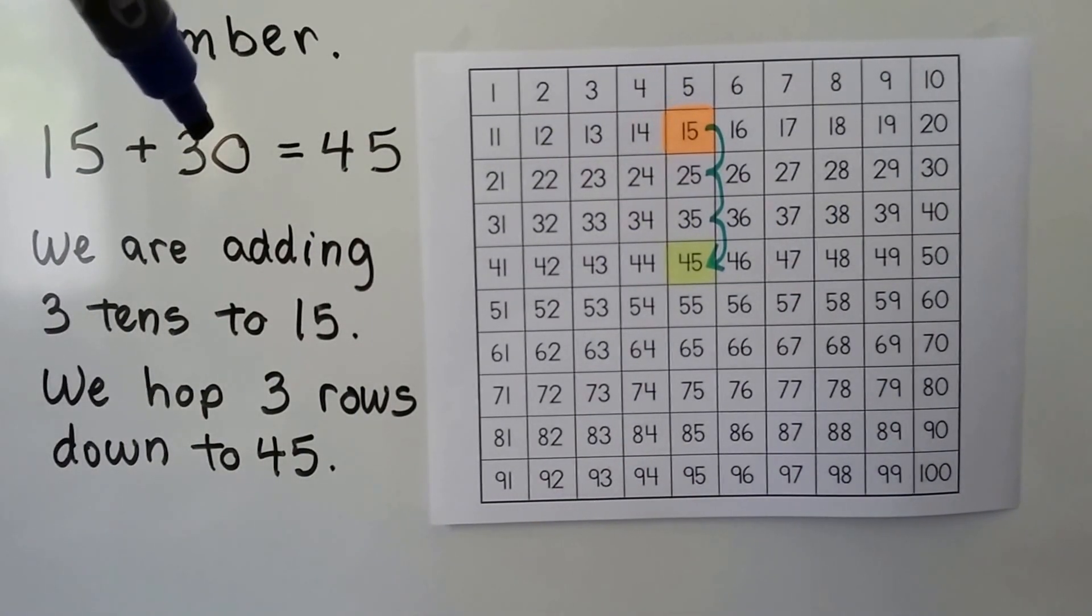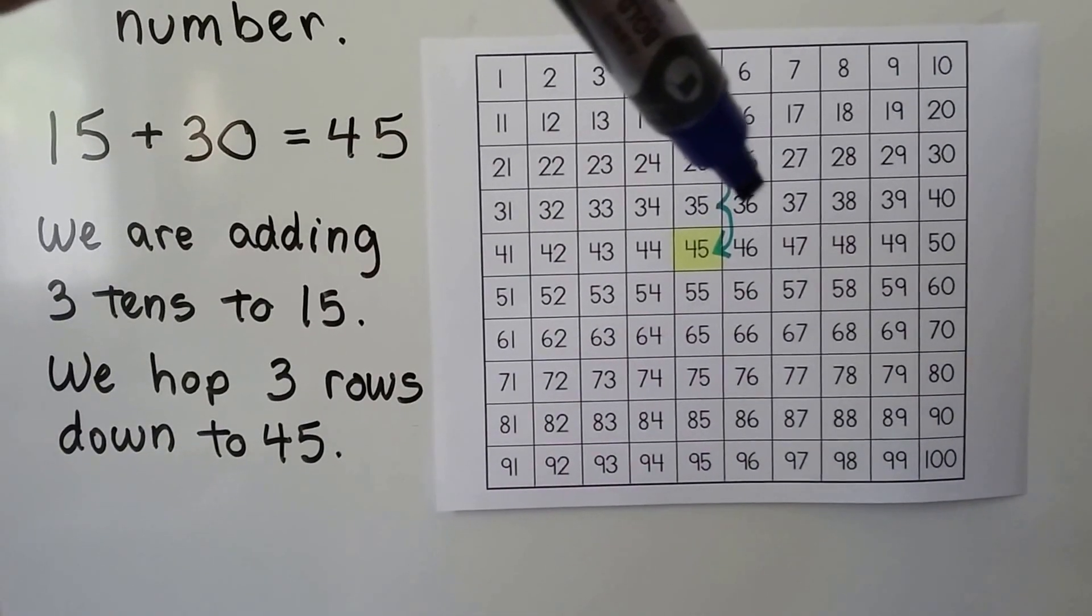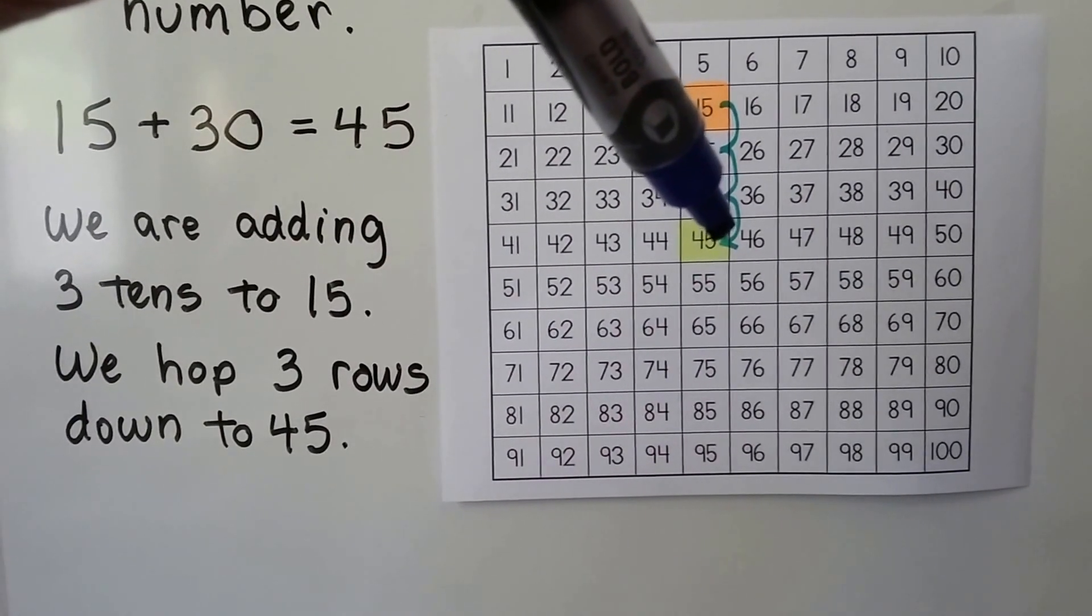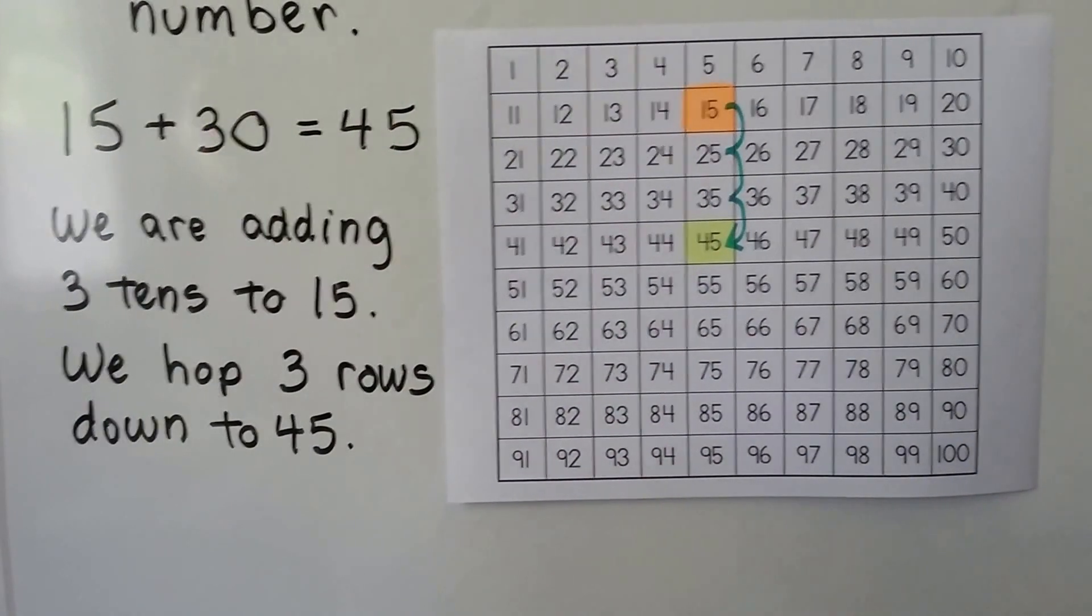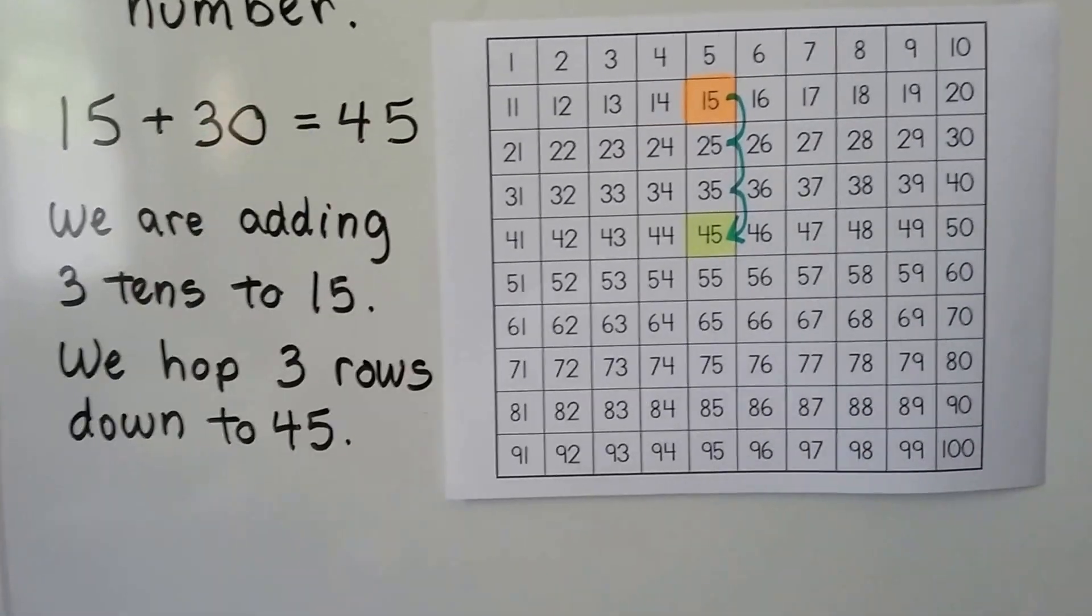We're adding three tens. We do three hops. One, two, three. We hop the three rows down to the 45. 15 plus 30 equals 45.